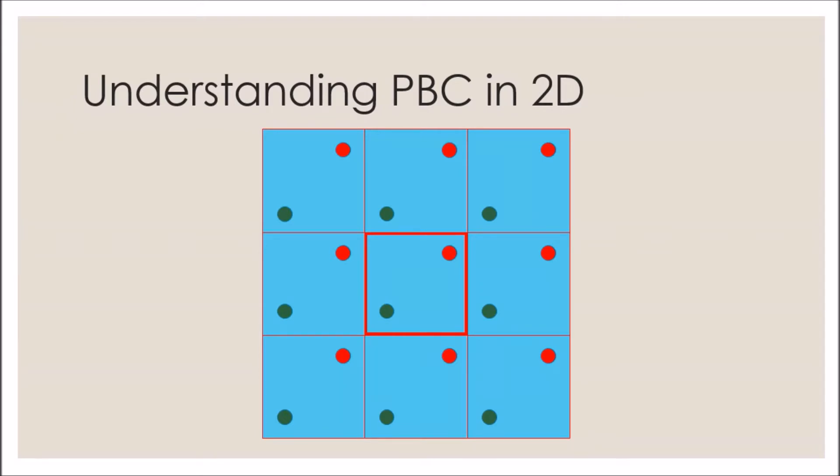One important distance for our system would be the distance between the green and the red particle. There are a lot of images. In total there are 9 images for the red particle, and the distance of each image from the green particle varies. What we want to look in our simulation is the nearest image.